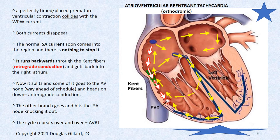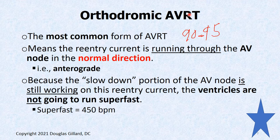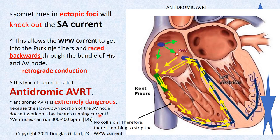So that is orthodromic AVRT — the most common form, about 90 to 95% of the time. The key testable point: the current runs through the AV node anterograde in orthodromic AVRT. The slowdown portion is still working, so it won't go crazy — it runs around 225 beats per minute. On a board question, if it says AVRT without specifying, assume it means orthodromic AVRT.